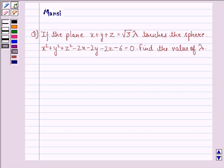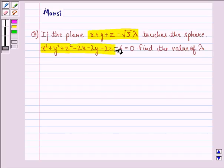The question says if the plane x + y + z = 2√3λ touches the sphere x² + y² + z² - 2x - 2y - 2z - 6 = 0, find the value of λ.